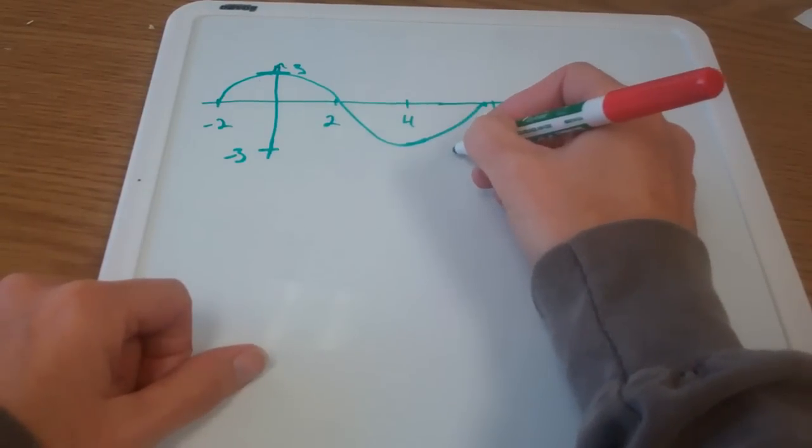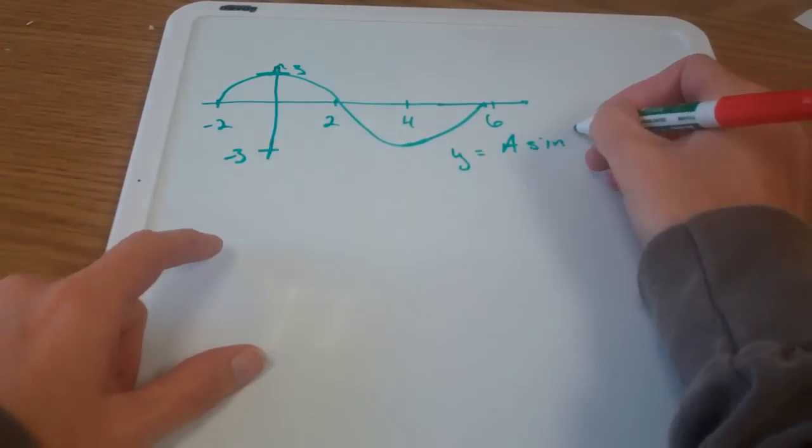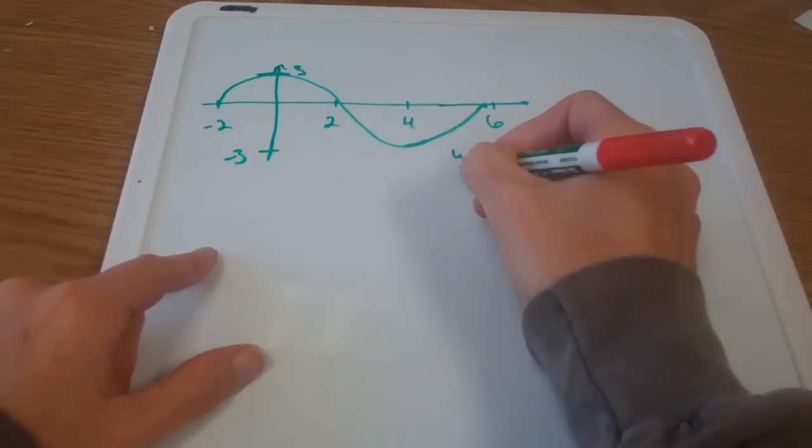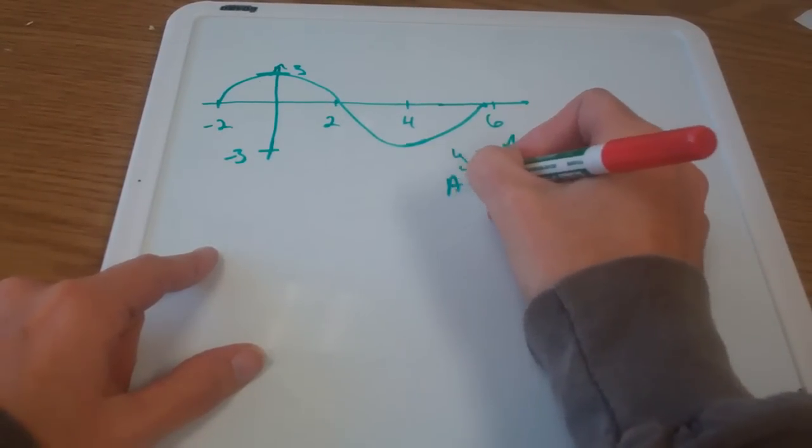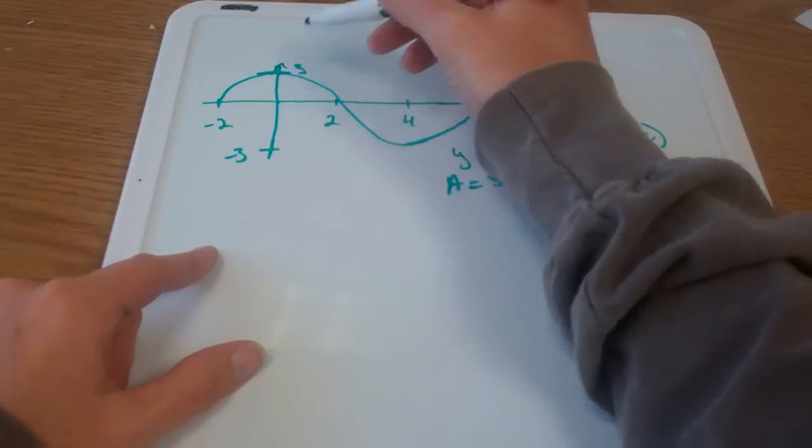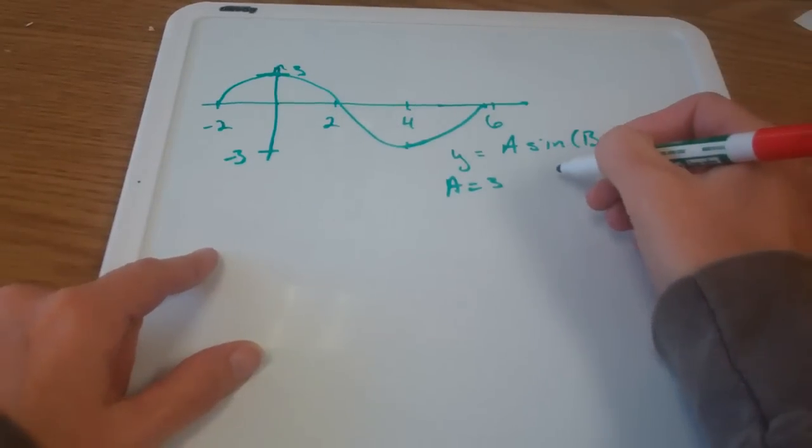Okay, so my goal here is to write this in the form y equals a sine bx plus c. I can see from the picture that the amplitude is three. That's how far up it goes above the x-axis and how far down it goes below the x-axis. So my amplitude is three.